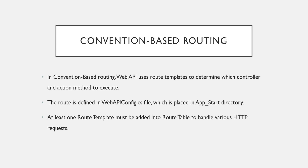In convention-based routing, the route is defined in the WebApiConfig.cs file, which is placed in the App_Start directory in Visual Studio. I'll show you the exact location where we generally specify the route template. It's a rule that you should have at least a single route template present in your route table to handle the various HTTP requests. One default route is already created when you create a Web API application.